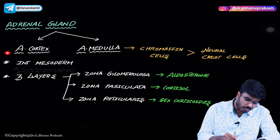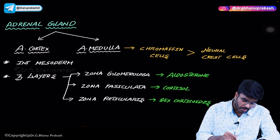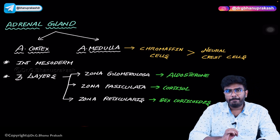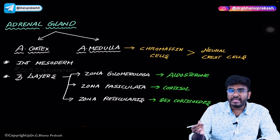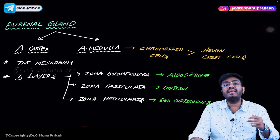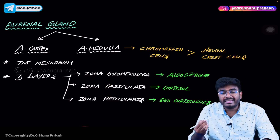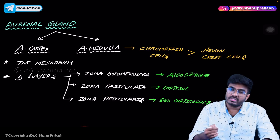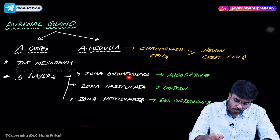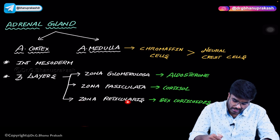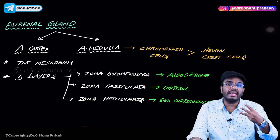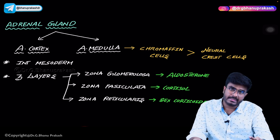Now let's look at some important points about the adrenal cortex. The adrenal cortex is divided into three layers from outer to inner — remember it using the mnemonic GFR. The three zones are: zona glomerulosa, zona fasciculata, and zona reticularis.